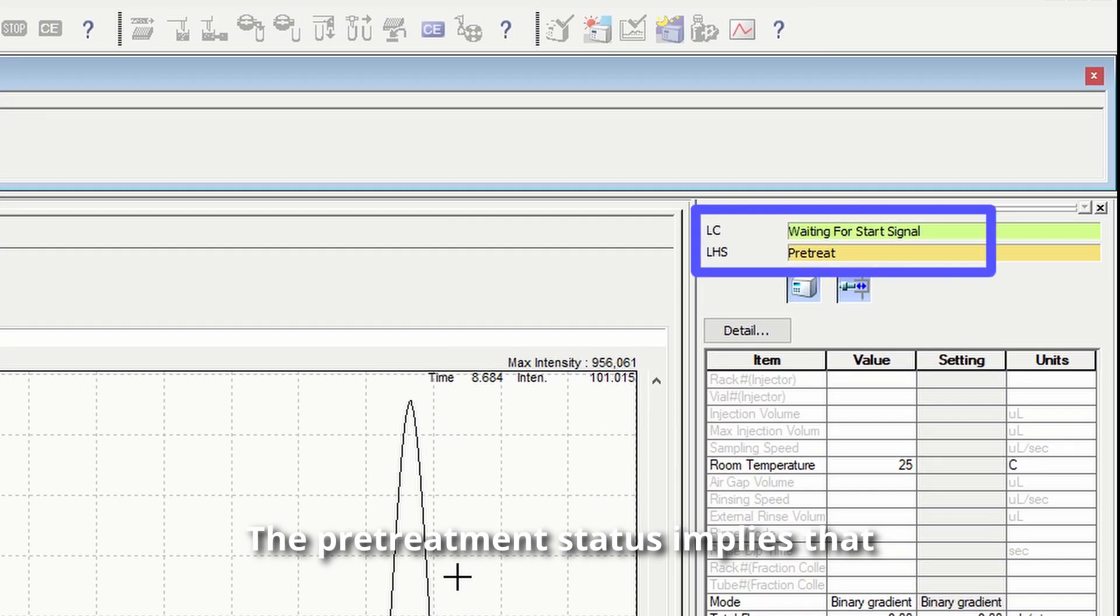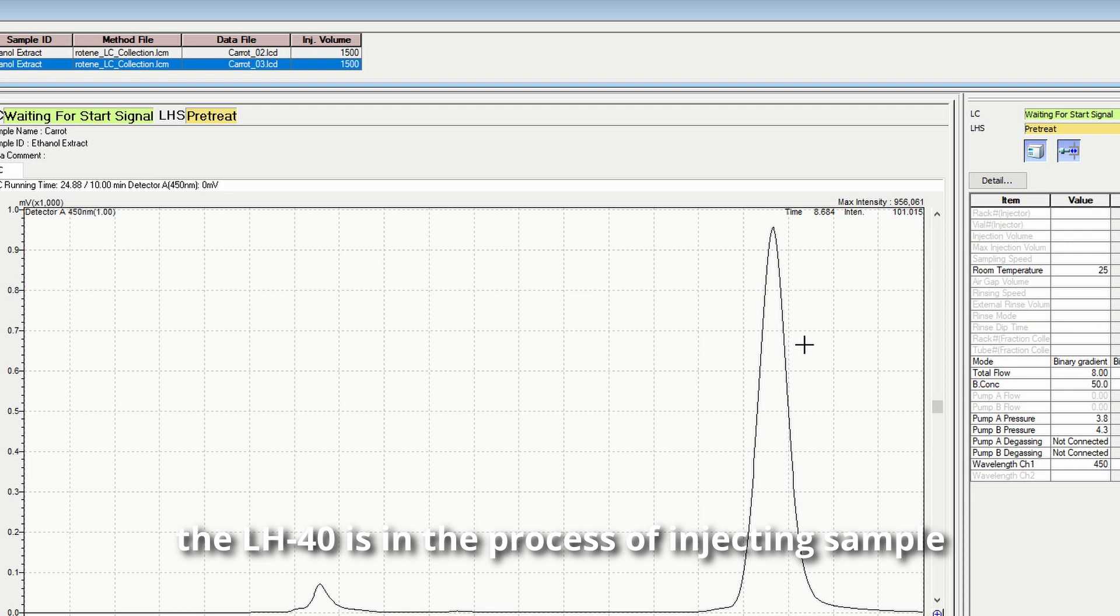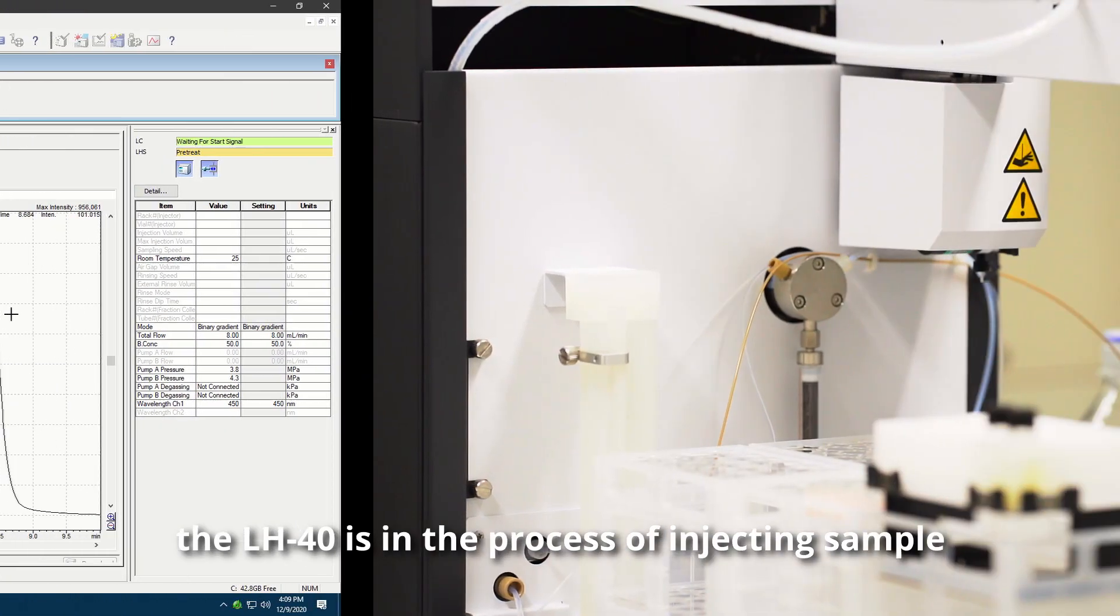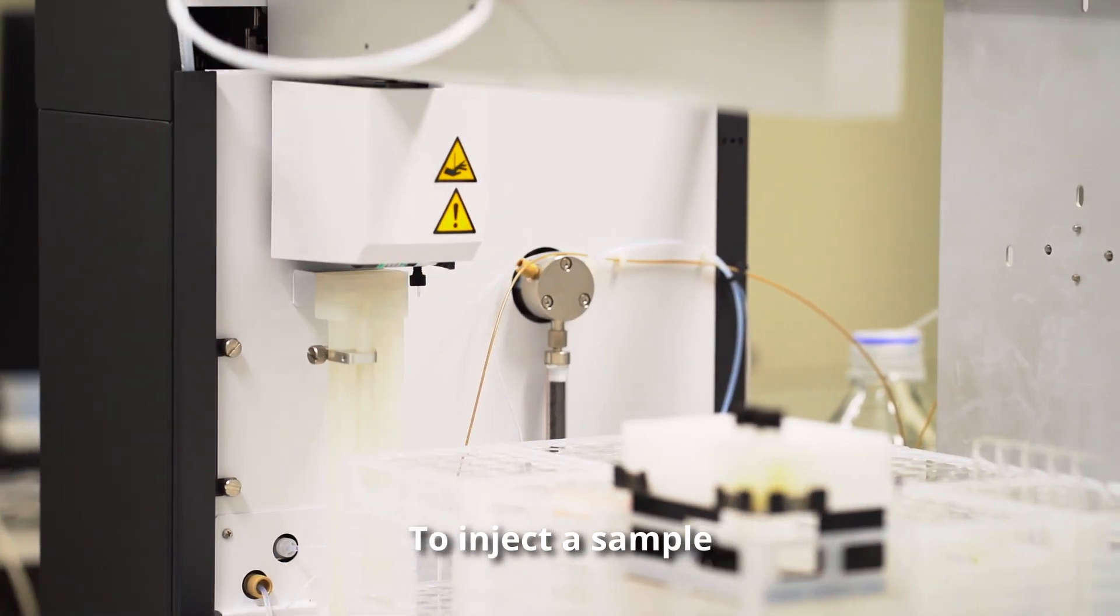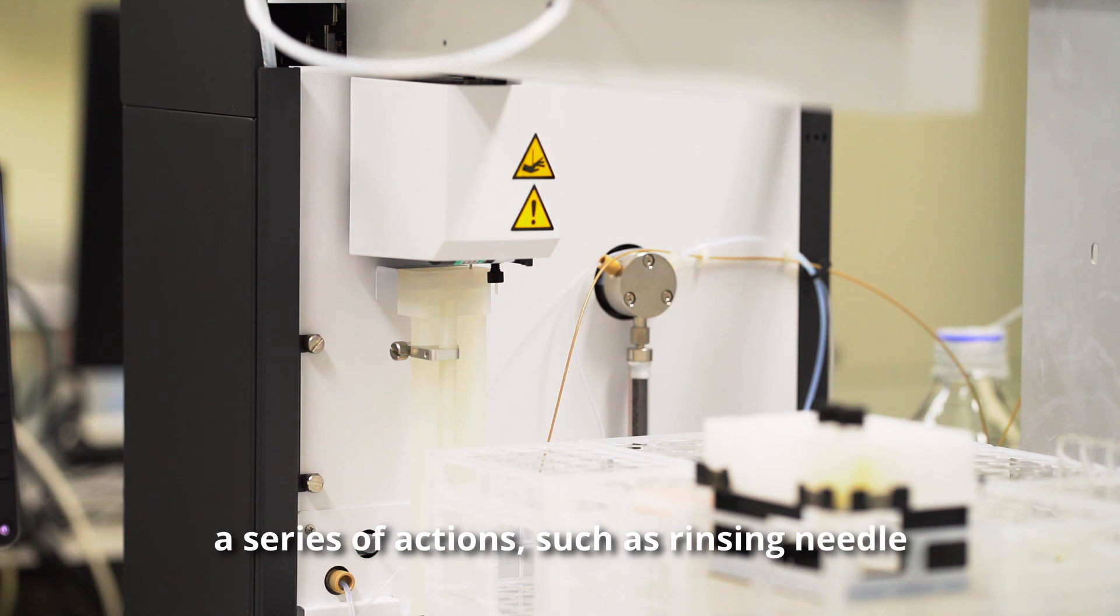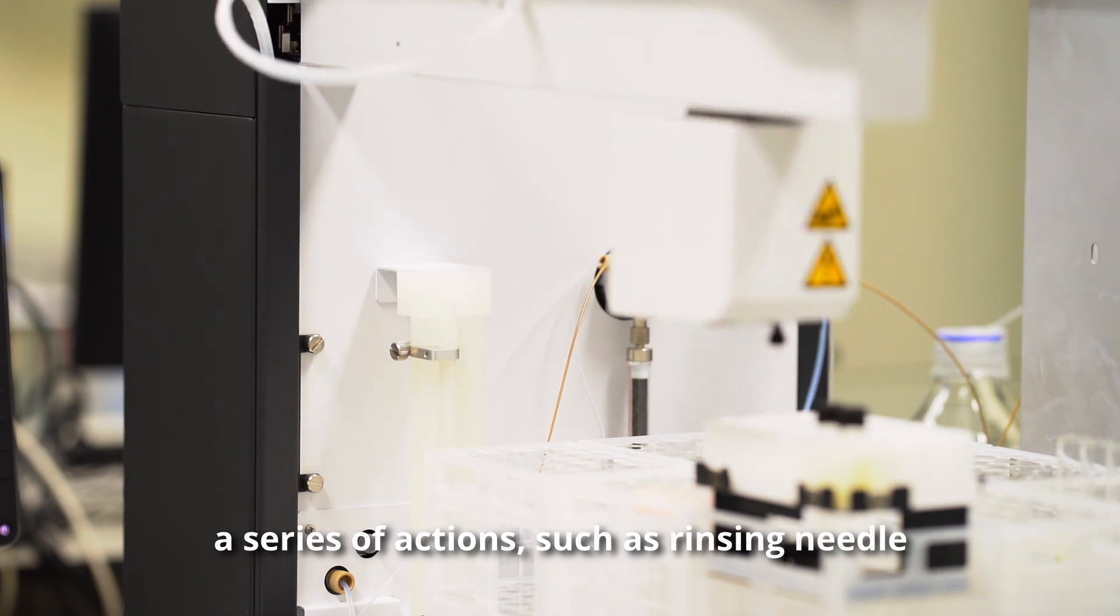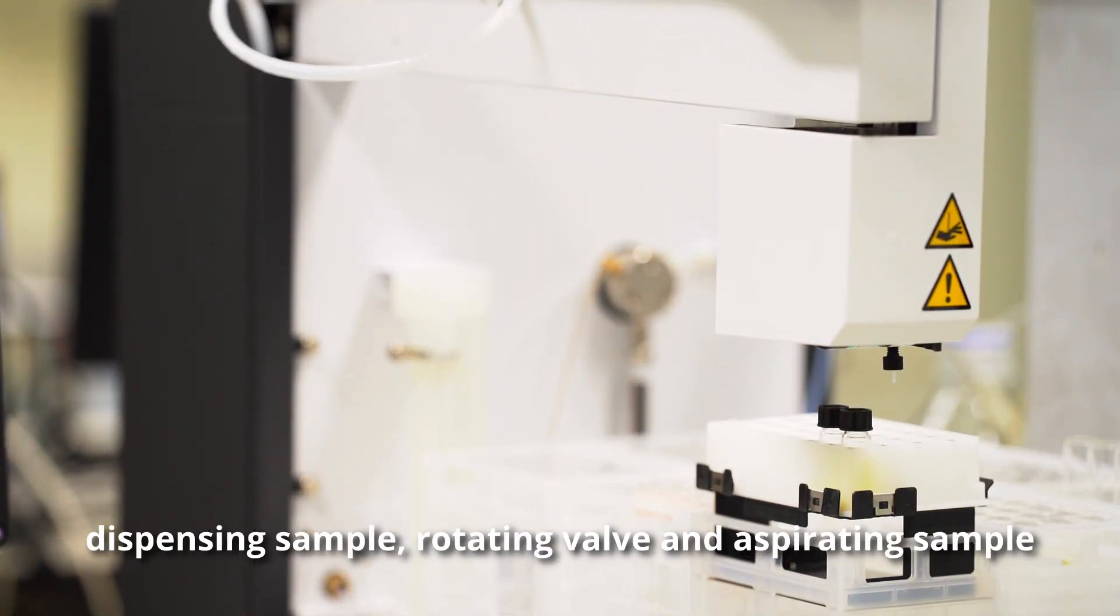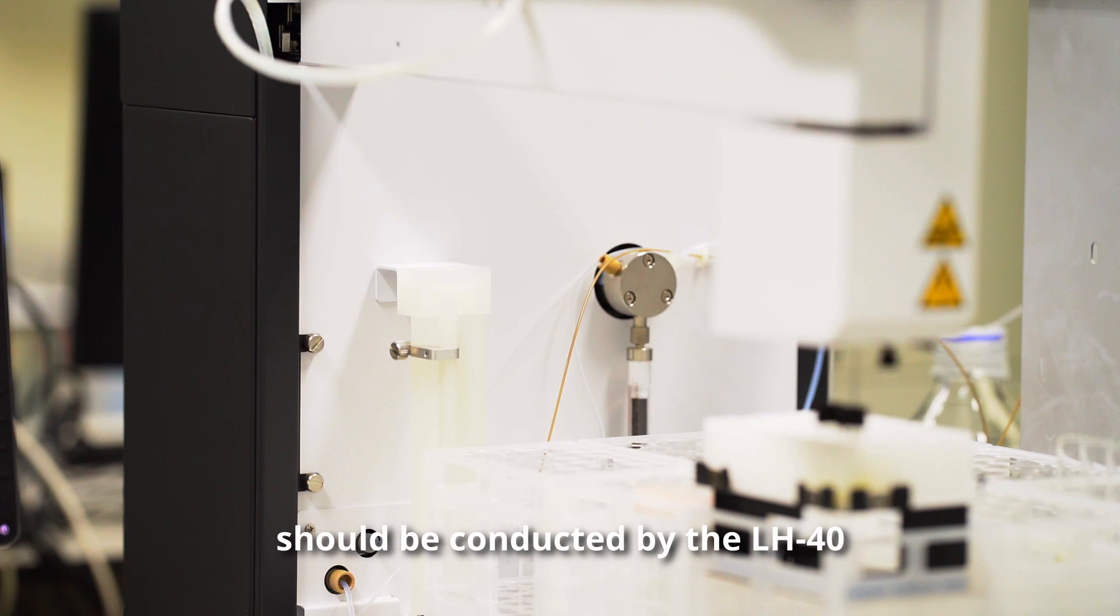The Pre-Treatment Status implies that the LH40 is in the process of injecting sample. To inject a sample, a series of actions such as rinsing needle, dispensing sample, rotating valve, and aspirating sample should be conducted by the LH40.